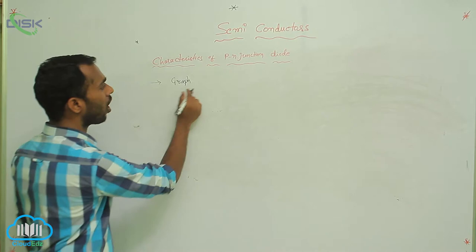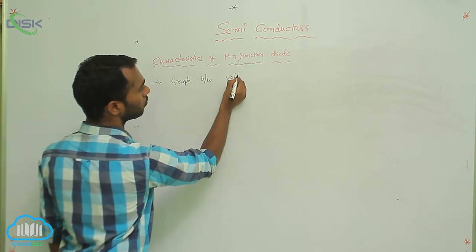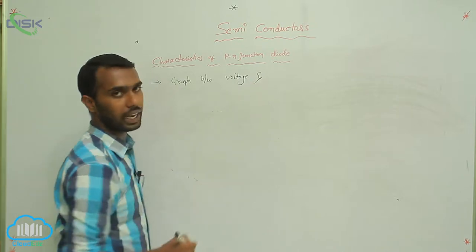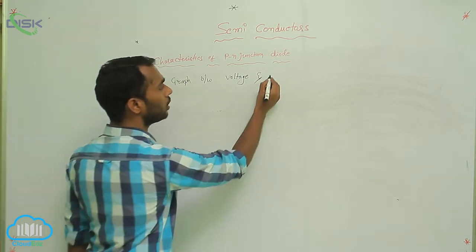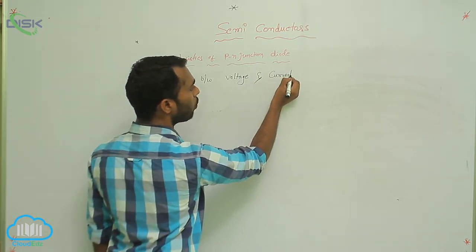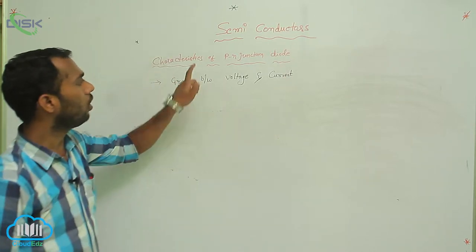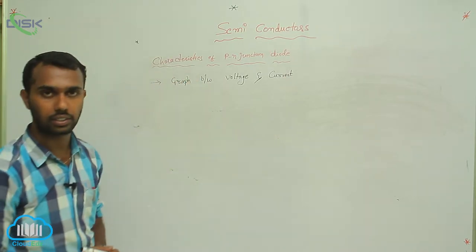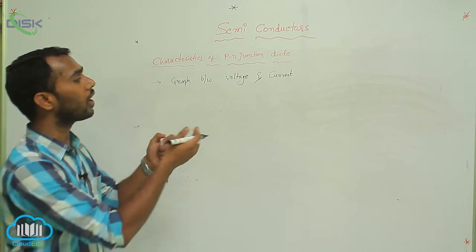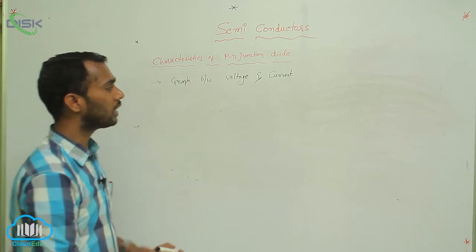The graph between voltage and current is called characteristics. If you apply the voltage, how current changes? We have to check in a graph.